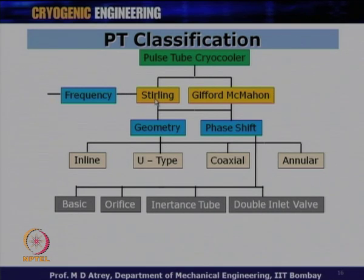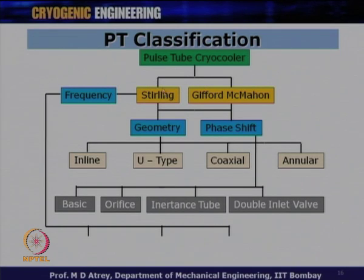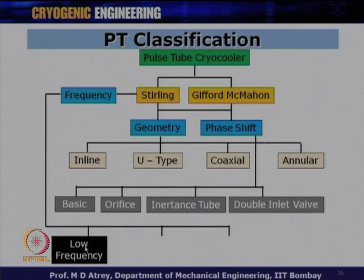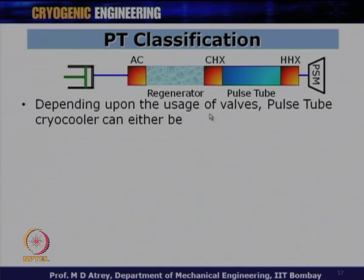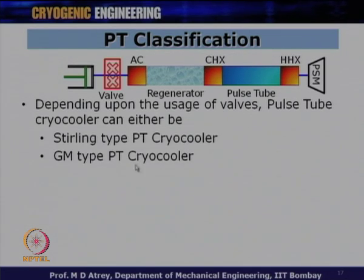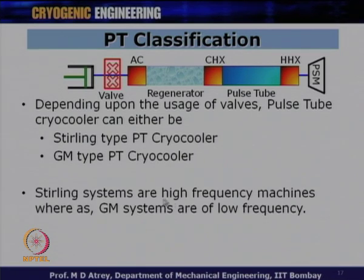Under the Stirling type, based on operating frequency, a Stirling type pulse tube cooler can be classified as: low frequency (less than 30 Hz), high frequency (30 to 80 Hz), and very high frequency (more than 80 Hz). Note that the GM-type pulse tube cooler operates at only 1 to 2 Hz. Stirling systems are high frequency machines, whereas GM systems are low frequency machines.